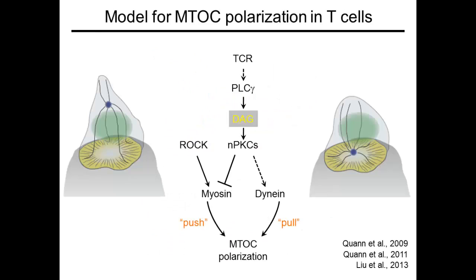The last slide summarizes what we've learned about T-cell MTOC reorientation in the past few years. TCR activation induces the formation of a synaptic gradient of DAG, which induces the recruitment of novel PKCs, which then coordinate the distribution of dynein and myosin-2 to drive MTOC movement.